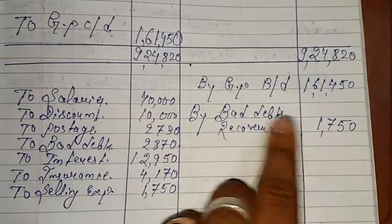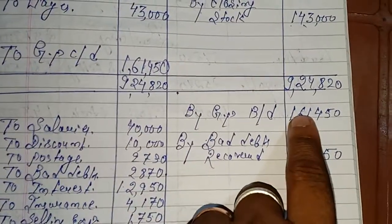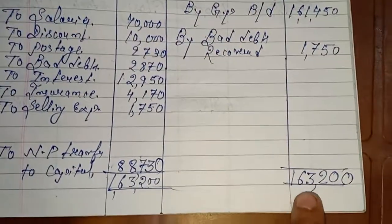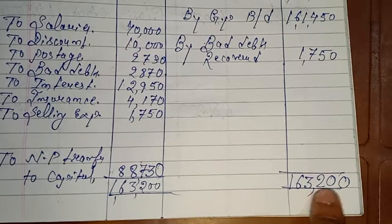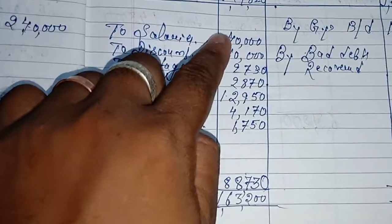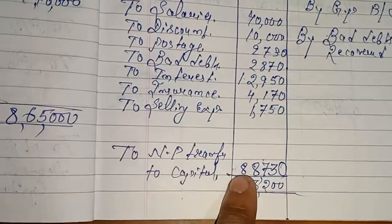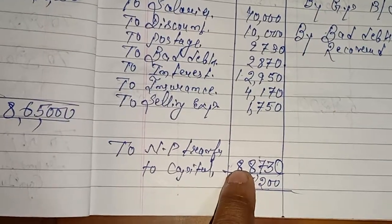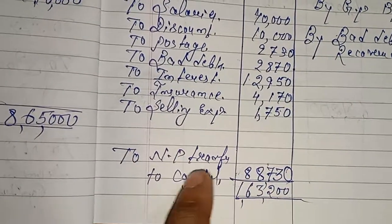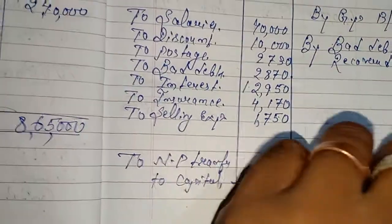Credit में एक ही item है: By Bad Debts Recovered। तो Gross Profit में Bad Debts Recovered को total किये 1,63,200, उससे minus किये इन सभी को जोड़ के — मेरा answer आया 88,730। To Net Profit — transfer to Capital।